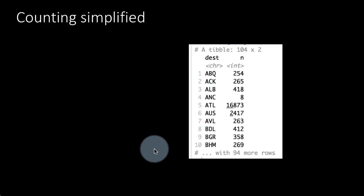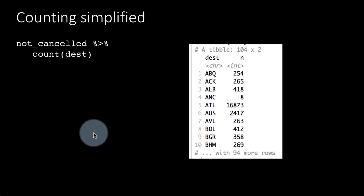So counting is a process we do very often. For example, we are saying not_cancelled count destination. You can do that. That is, you want to find out for every destination how many flights went there. It would be one thing to say not_cancelled group by destination summarize count equals n. You can do that.